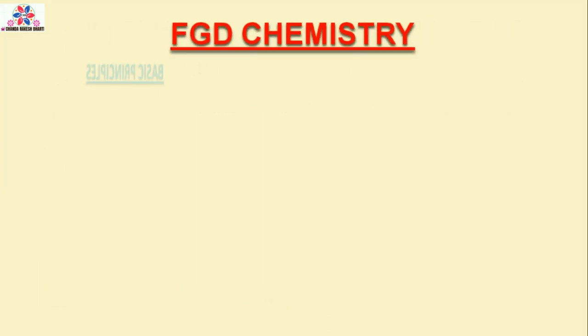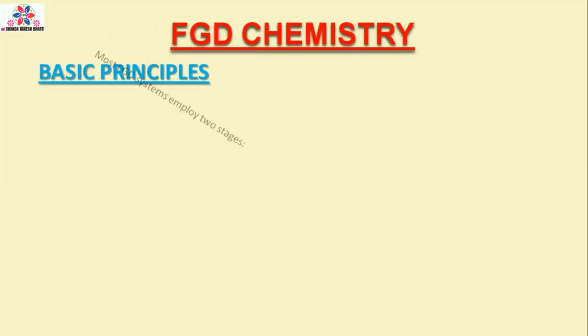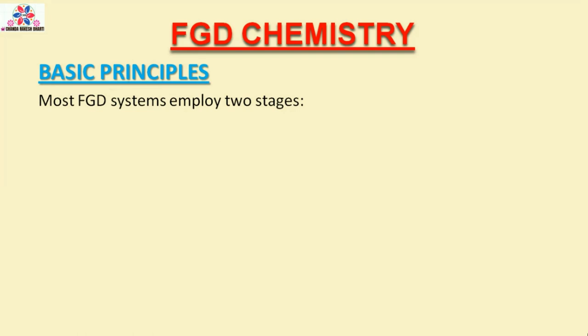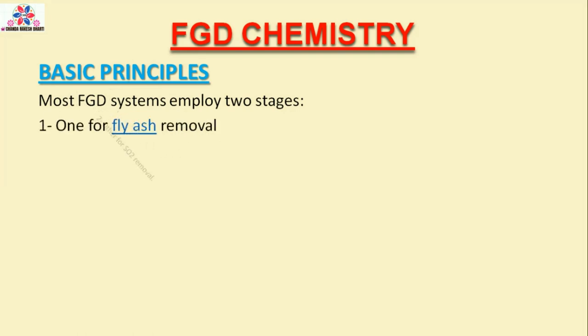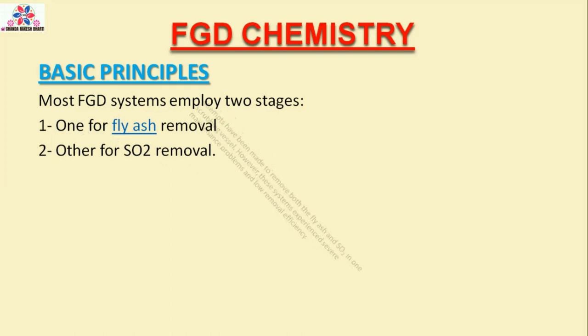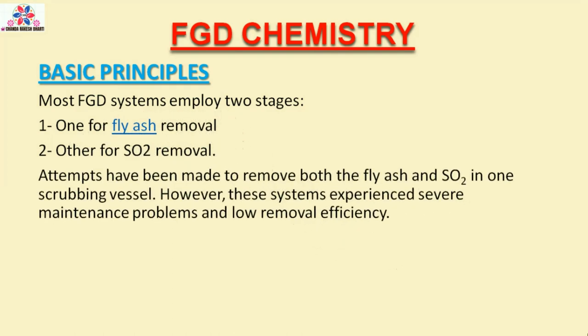FGD Chemistry Basic Principles: Most FGD systems employ two stages — one for fly ash removal and one for SO2 removal. Attempts have been made to remove both the fly ash and SO2 in one scrubbing vessel. However, these systems experienced severe maintenance problems and low removal efficiency.